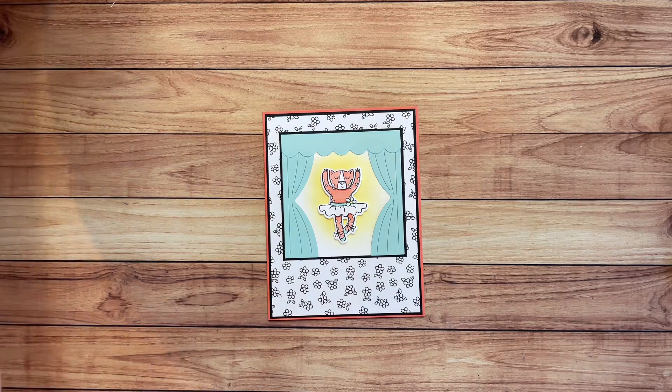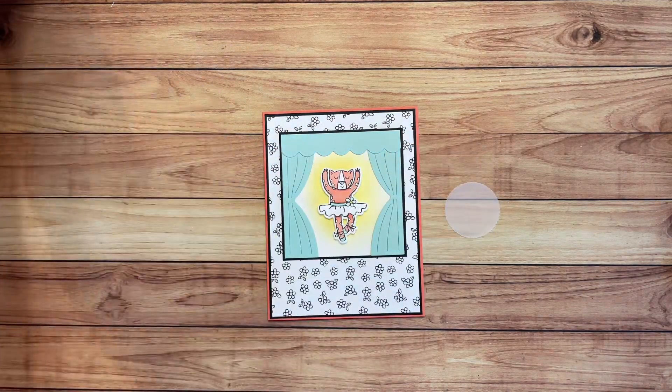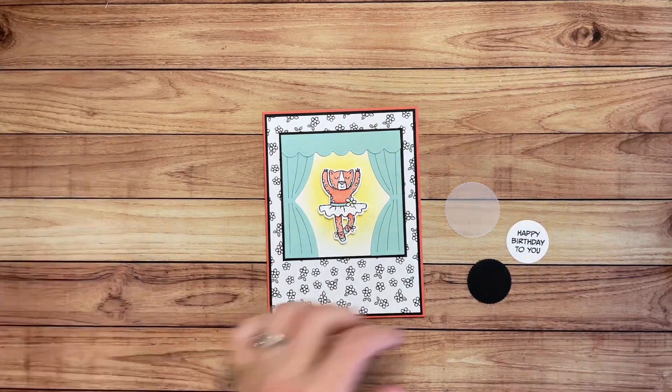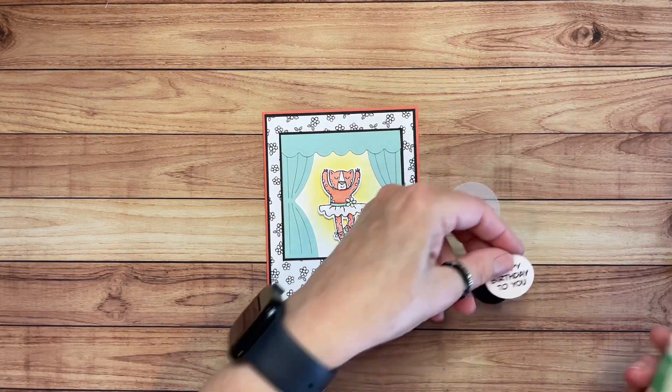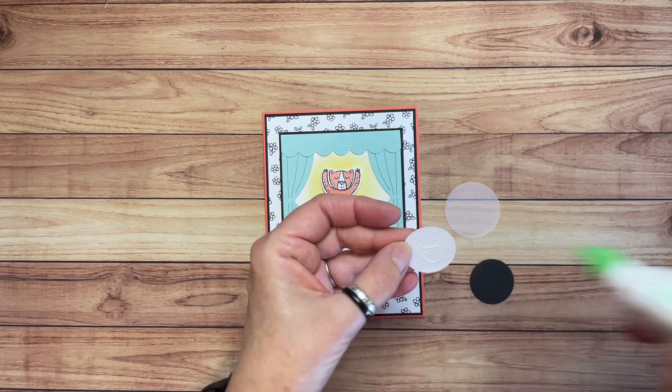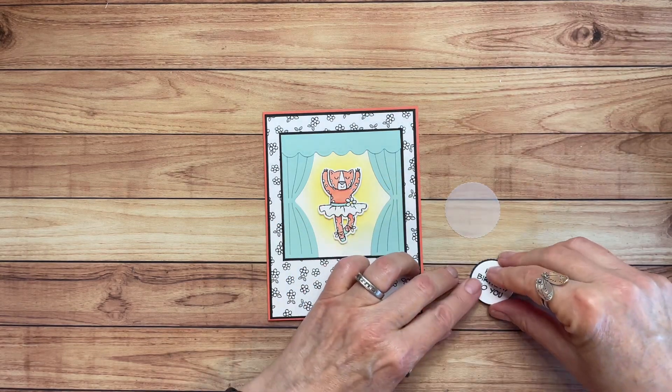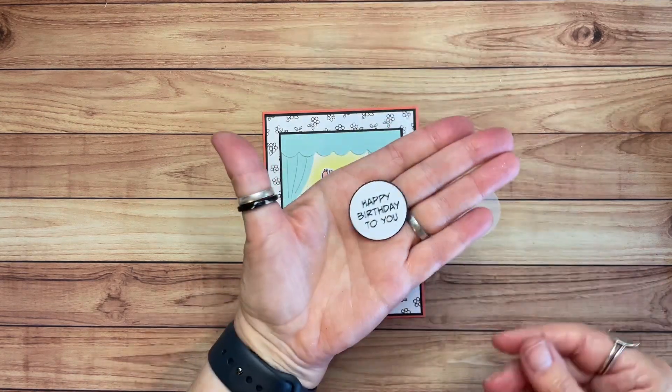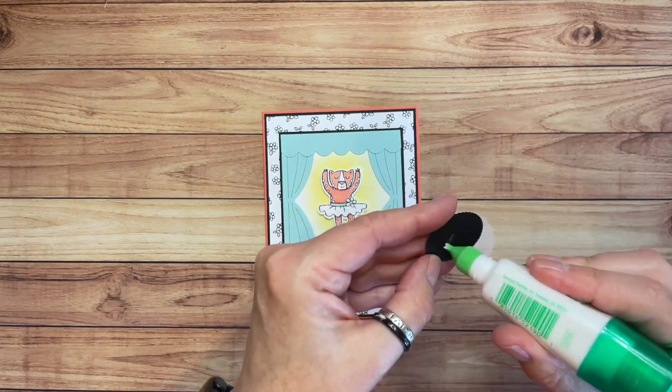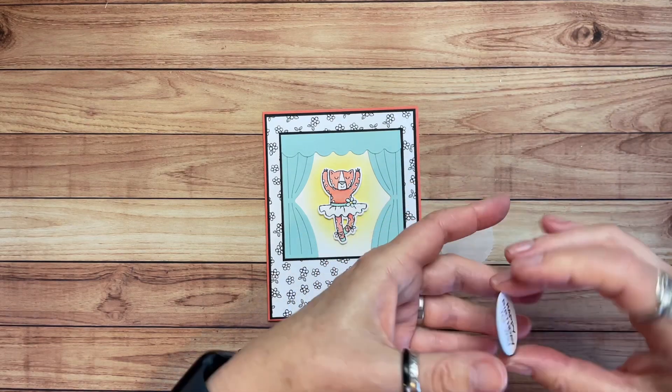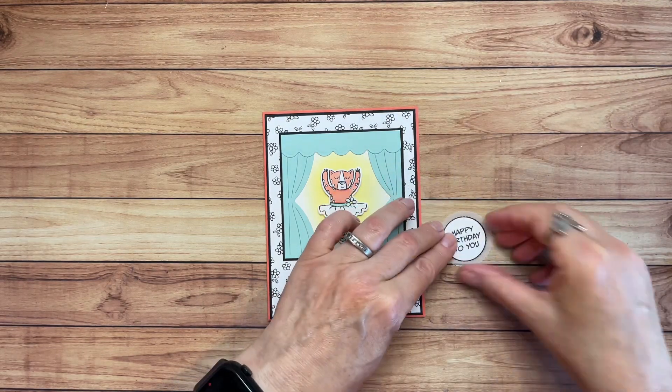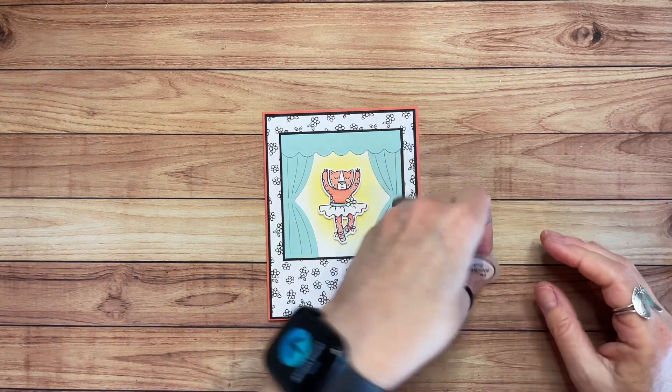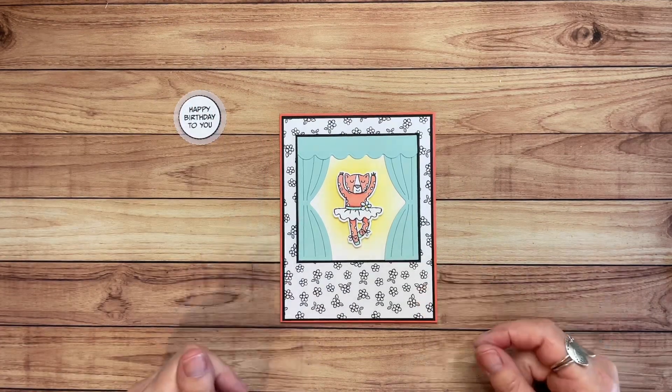Now let's grab a few other things. I talked about the vellum, the basic black, and these are all from the layering circles dies. So let's adhere these together. This goes on here and the black is just going to barely peek out around the edges of that basic white. Then this goes on the vellum. And let me center that on there. Now I'm going to let that dry for just a minute and do a couple other things here.